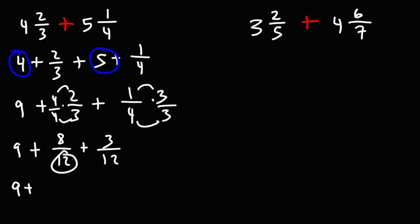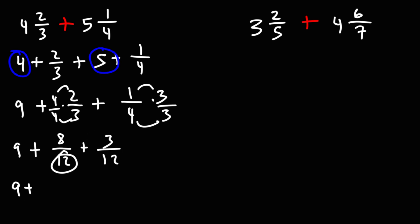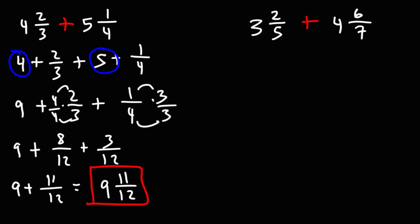So now that the denominators are the same, we can add the numerators of the two fractions. So we have 8 plus 3, which is 11. 9 plus 11 twelfths is the same as 9 and 11 over 12. So this is the final answer as a mixed number.